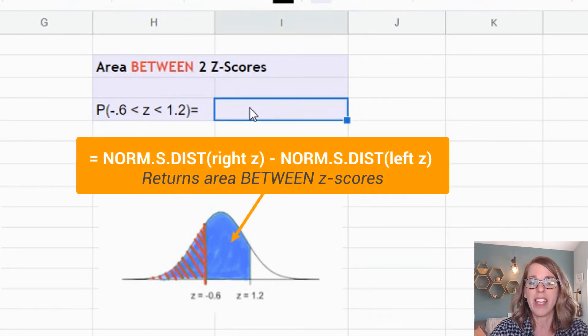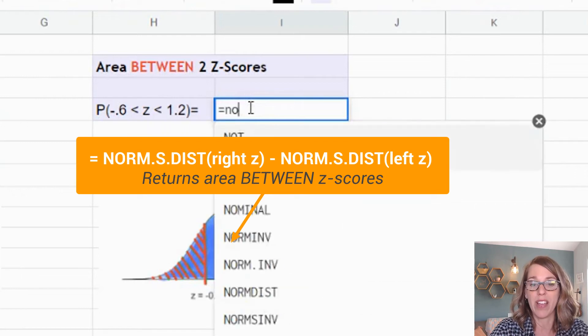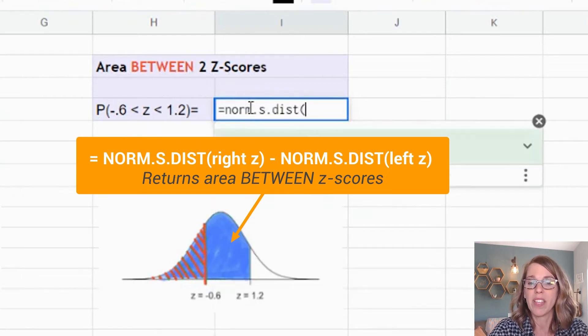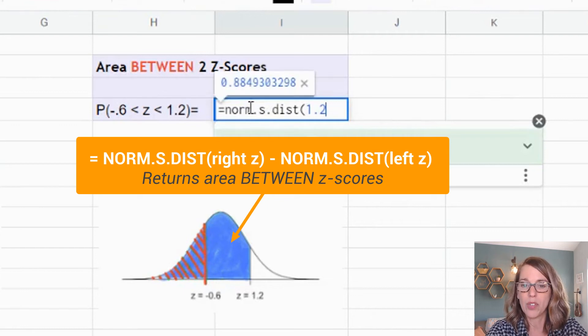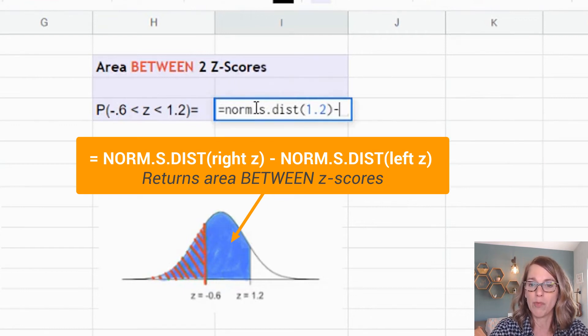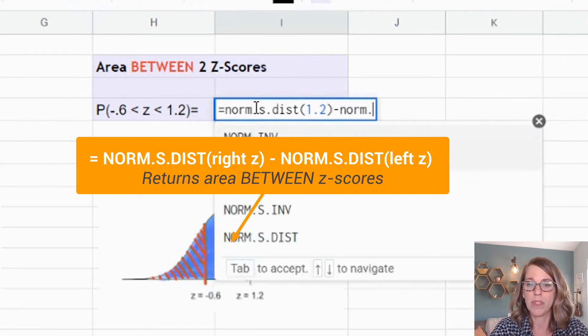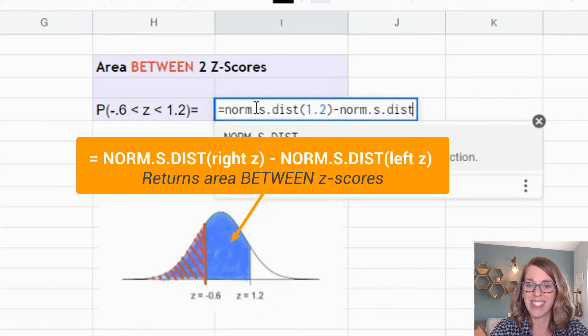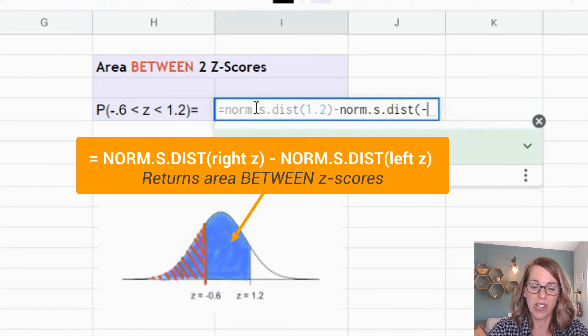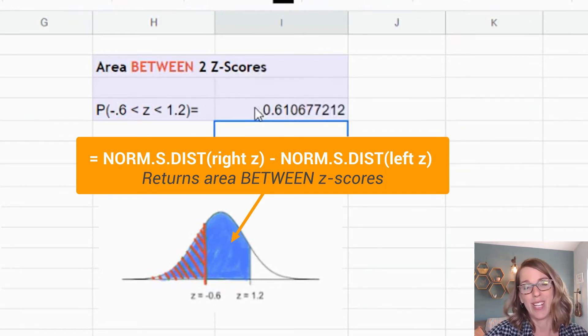So I'm going to take equals the blue area. NORM.S.DIST, that's to the left of 1.2, and I'm going to subtract the area to the left of negative 0.6. NORM.S.DIST, negative 0.6, and what I end up with is the area in between.